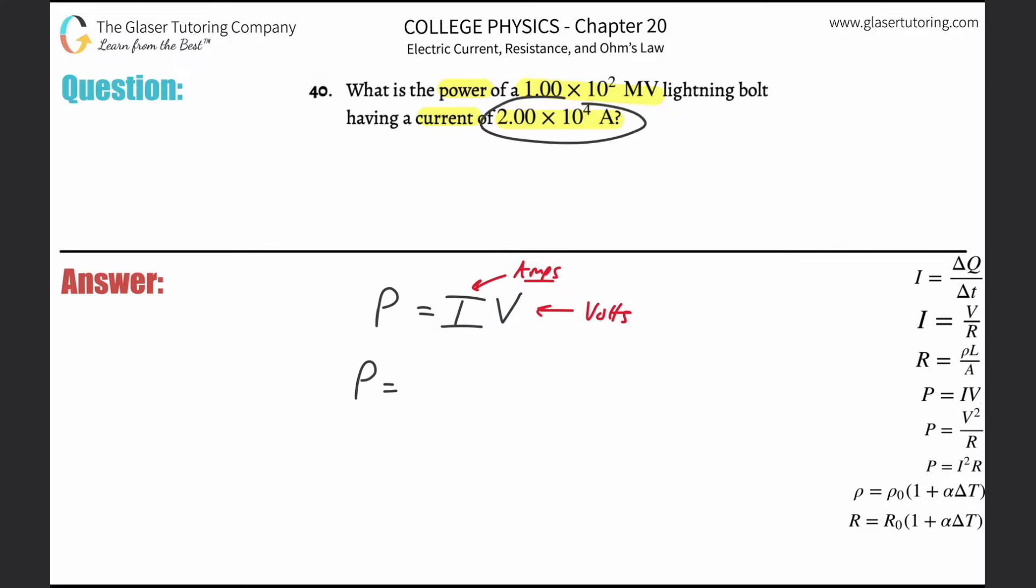So the current they gave us was 2 times 10 to the 4 amps. That's great. So 2 times 10 to the 4 amps, I can just simply plug that in. Remember, amp is simply a coulomb per second. So they could have also given you those units as well. And then we're going to multiply that by the voltage in volts. However, they gave it to us in megavolts, right? So in order to convert this into volts, all I got to simply do is take 1 times 10 to the 2 and then multiply it by 10 to the 6. All right, that's the prefix basically for the mega.